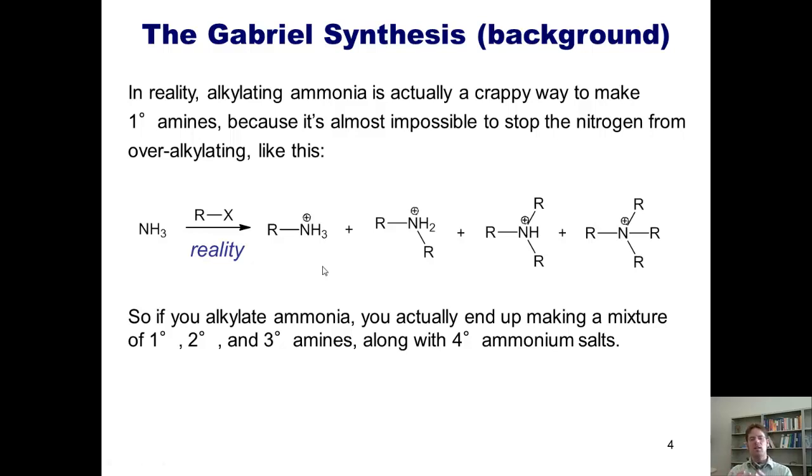In reality, alkylating ammonia is actually a very crappy way to make primary amines, because it's almost impossible to stop the nitrogen from over-alkylating. You get the nitrogen stirring with excess alkyl halide. You get a mixture of monoalkylated amine or ammonia, dialkylated ammonia, trialkylated ammonia, and quaternary ammonium salts, all in mixture. You neutralize these three, you end up getting a mixture of primary, secondary, and tertiary amines, along with isolated ammonium salts as a precipitate.